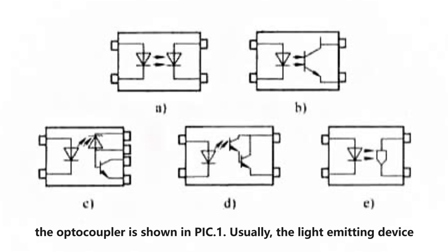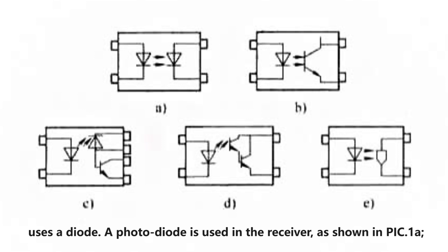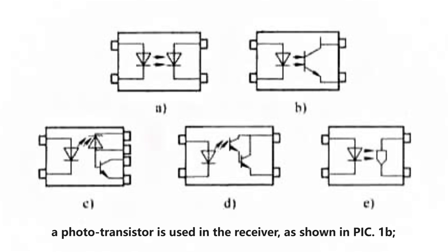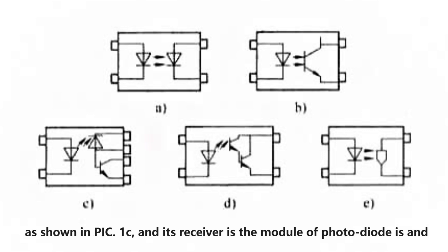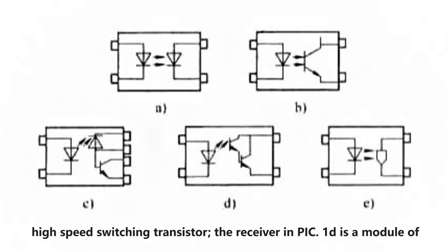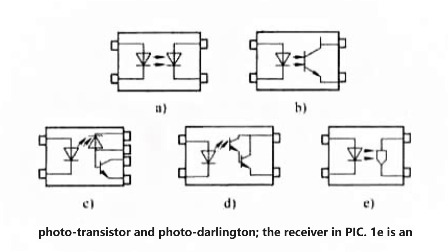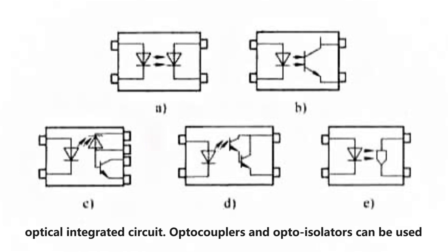Usually the light-emitting device uses a diode. A photodiode is used in the receiver, as shown in PIC-1A. The phototransistor is used in the receiver, as shown in PIC-1B. An optical integrated component is used as a receiving device, as shown in PIC-1C, and its receiver is a module of a photodiode and high-speed switching transistor. The receiver in PIC-1D is a module of phototransistor and photodarlington. The receiver in PIC-1E is an optical integrated circuit.